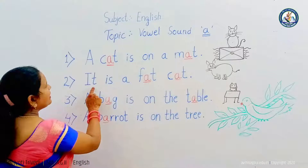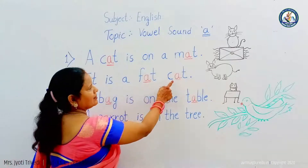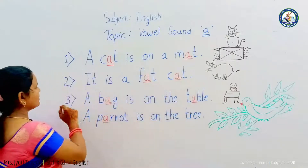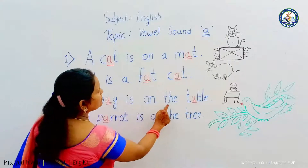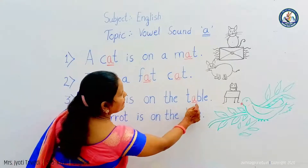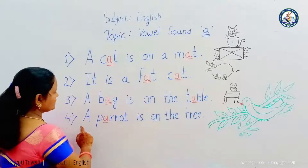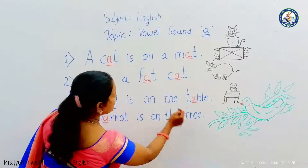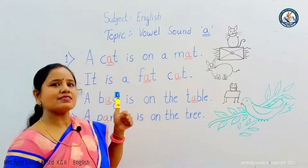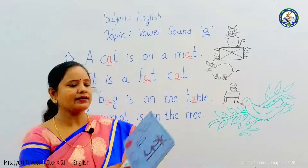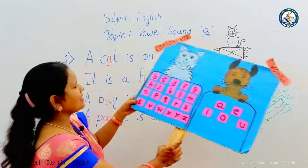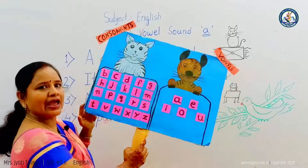Second: it is a fat cat. F-A-T: fat. C-A-T: cat. Third: a bag is on the table. B-A-G: bag. See again — there are twenty-one consonants and five vowels.